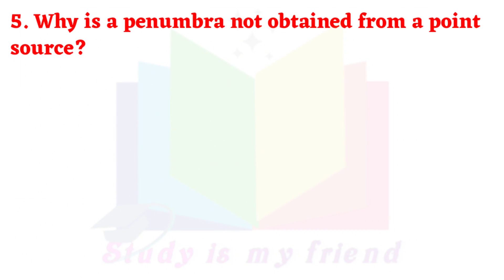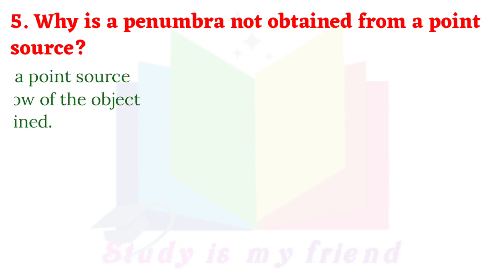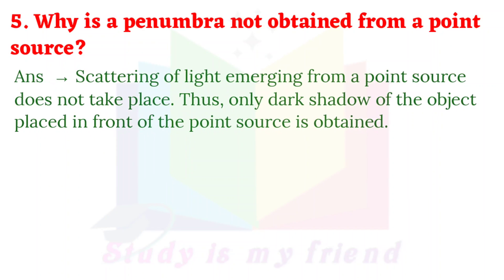Why is a penumbra not obtained from a point source? Answer: Scattering of light emerging from a point source does not take place. Thus, only the dark shadow (umbra) of the object placed in front of the point source is obtained.